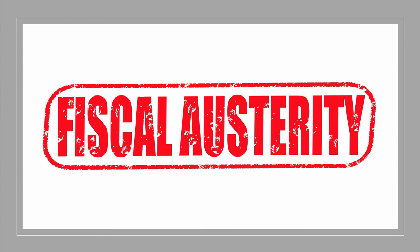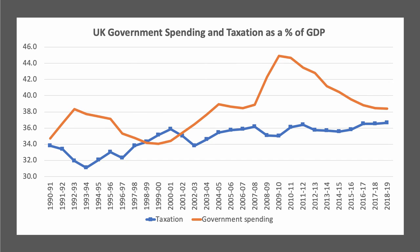A word or two on fiscal policy. Back in the autumn of 2018, the Chancellor of the Exchequer told us that fiscal austerity was coming to an end — well, that remains to be seen. This chart shows government spending in orange as a share of GDP, and there has been a substantial reduction in government spending as a share of national output, particularly since 2011–2012. There's also been a modest but significant increase in the tax burden — the government is now taking more in tax as a share of GDP. These are two aspects of fiscal austerity, and the gap between the two lines shows the fiscal deficit.